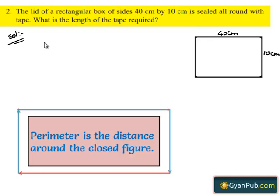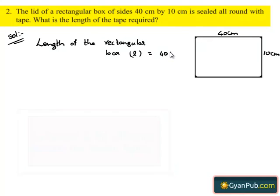First, write down the given data, which is length of the rectangular box L is equal to 40 cm and breadth of the rectangular box B is equal to 10 cm.